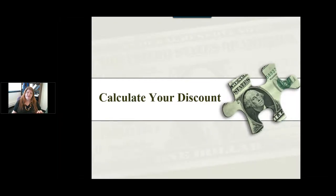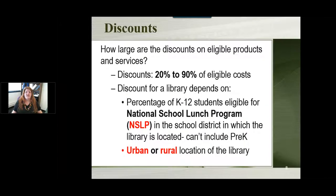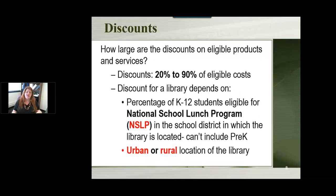The first thing I always tell libraries when looking into doing E-Rate is to figure out how much of a discount you can get. Libraries can get anywhere from 20% to 90% off their costs — nobody gets zero, and 90% is the highest. You can calculate this yourself offline, but within the E-Rate system online when you submit your forms, it will do the calculation for you.